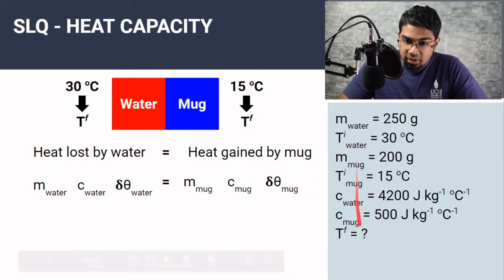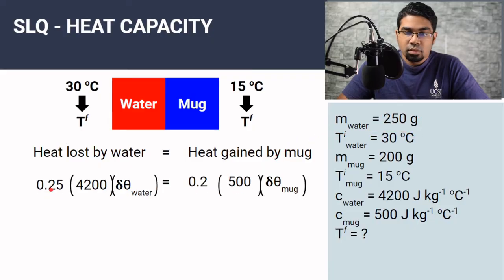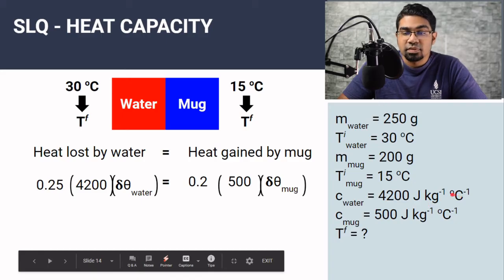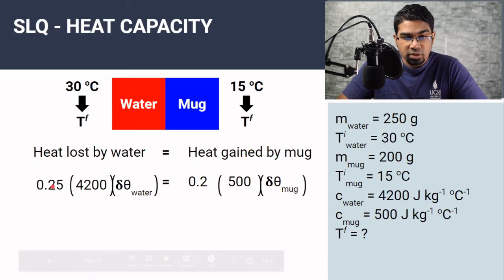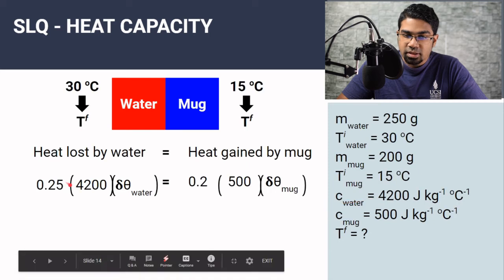We've already written all our values, so we can easily substitute them in. The units play an important role here — the unit for specific heat capacity is joules per kilogram per degree Celsius, so the unit of mass must be in kilograms. Therefore, 250 grams becomes 0.25 kilograms. Then we put in the specific heat capacity and change in temperature.